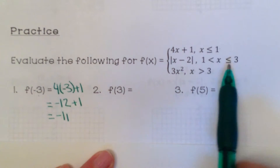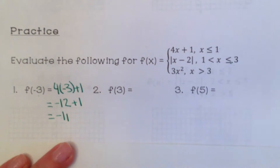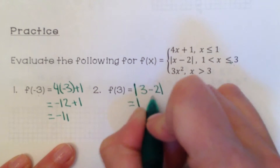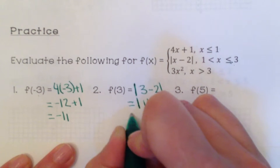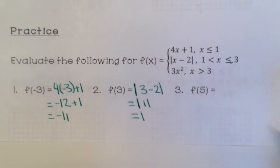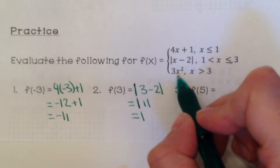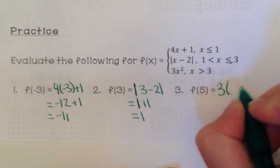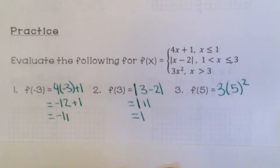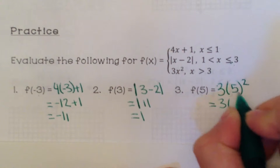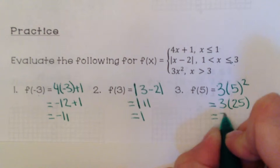For f of 3: 3 is in the middle piece because x values are greater than 1 and less than or equal to 3. So we use the absolute value of x minus 2. Absolute value of 3 minus 2: order of operations, do what's inside first, 3 minus 2 is 1, and the absolute value of 1 is 1. For f of 5, we use the last piece since 5 is greater than 3: 3x squared. Order of operations — square first: 3 times 25 is 75.